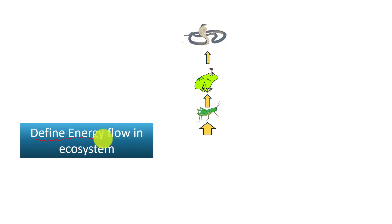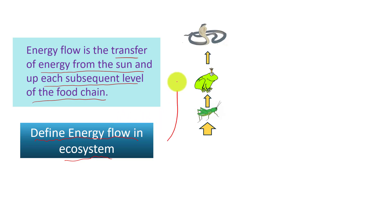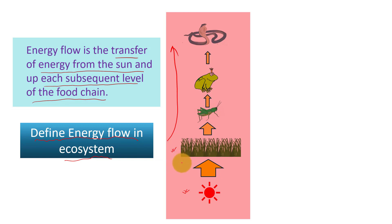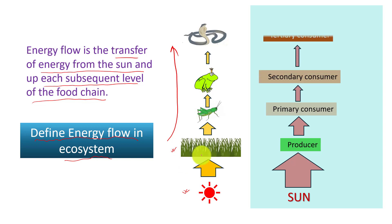Let us define energy flow in the ecosystem. Energy flow in an ecosystem can be defined as the transfer of energy from the sun and up each subsequent level of the food chain. Energy flows in one direction. Energy enters ecosystems as sunlight and is captured in chemical form by photoautotrophs like plants and algae. Each level of energy flow on the food chain is designated by a trophic level, and each subsequent step in the food chain is equivalent to a new trophic level.